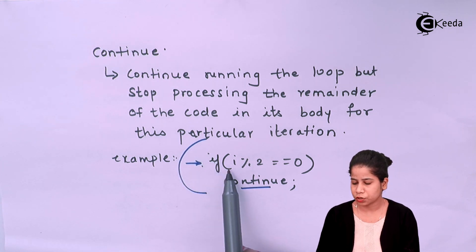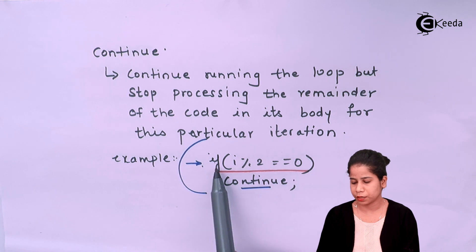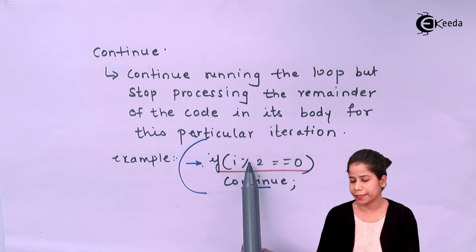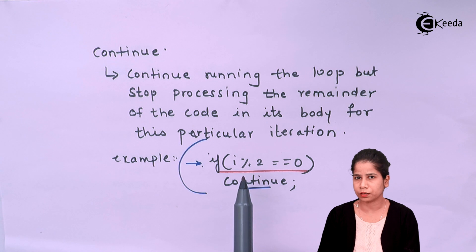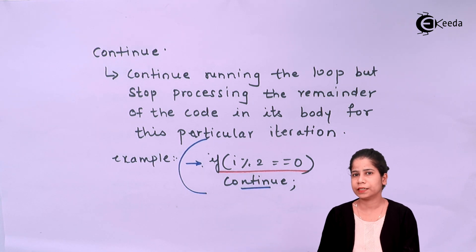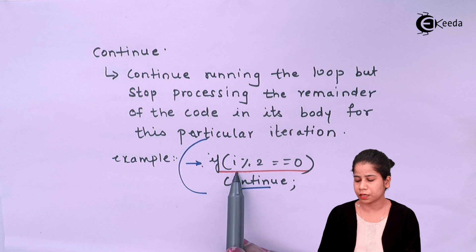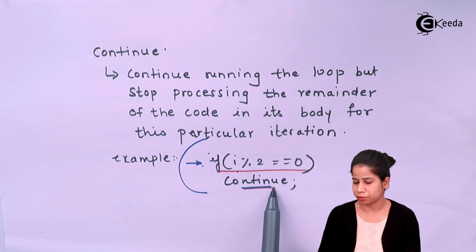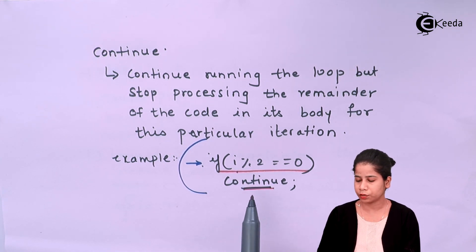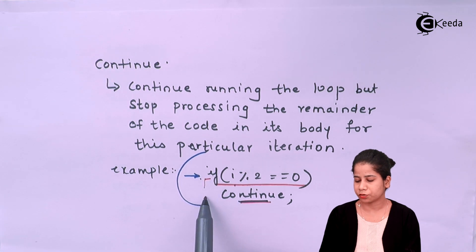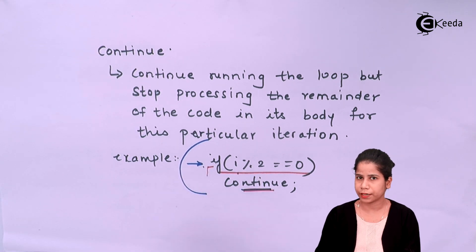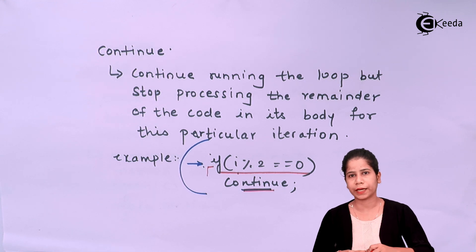Here's the syntax of the continue statement. The condition checks if i mod 2 equals zero — that means checking whether a number i is even. If the number is even then it will continue, meaning it will skip that particular iteration in which it is enclosed.